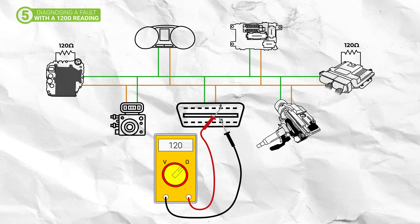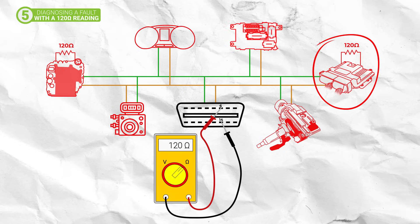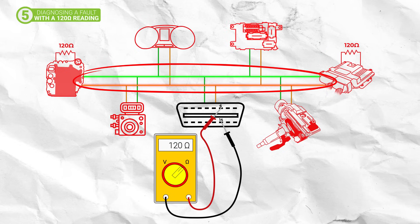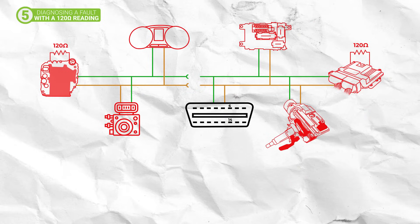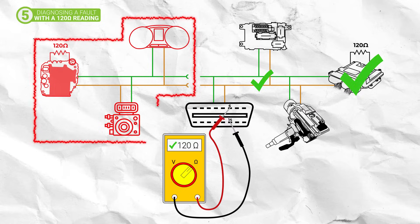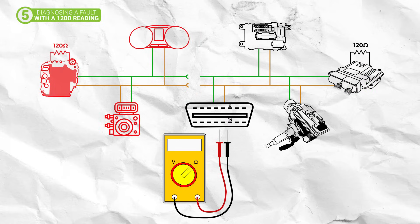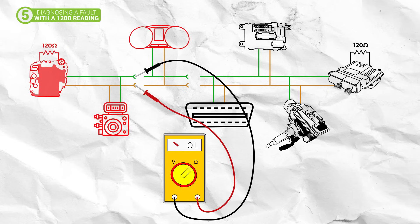If you got a reading of 120 ohms when testing at the OBD2 port, then there is an open circuit somewhere in the network between the two terminating resistors. This will typically be accompanied by all the units on the CAN bus network suffering from communication faults. This will be caused by an open in one of the modules containing the terminating resistor, or in the wiring between the two. To diagnose where this fault is, use your vehicle's wiring diagram to identify any harness separation points that you can disconnect to split the circuit in half, then repeat the test at the OBD2 port. If the reading stays the same, the fault lies within the disconnected side of the circuit.